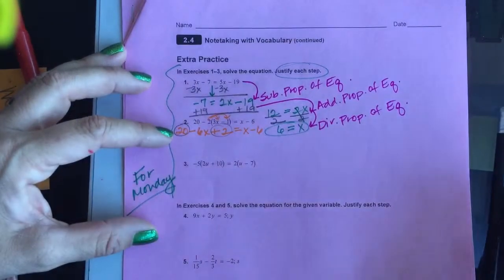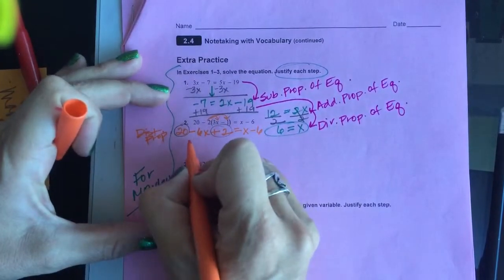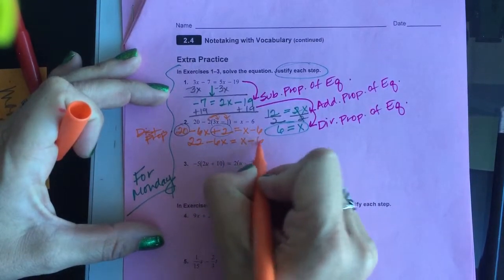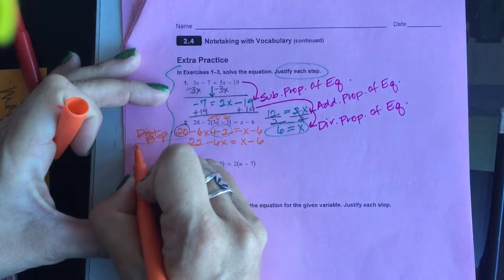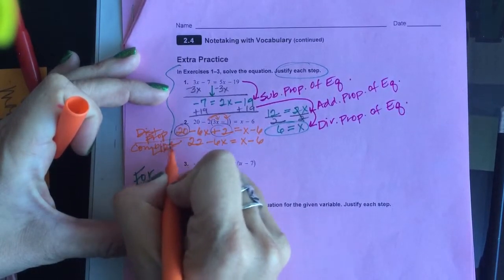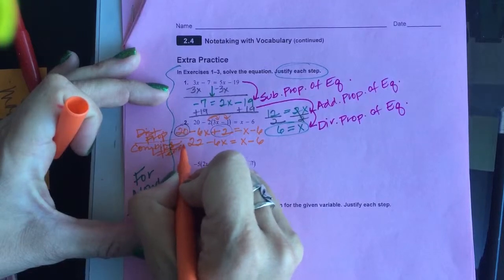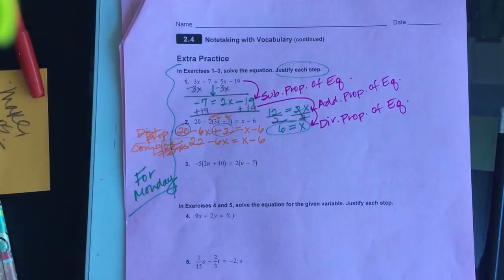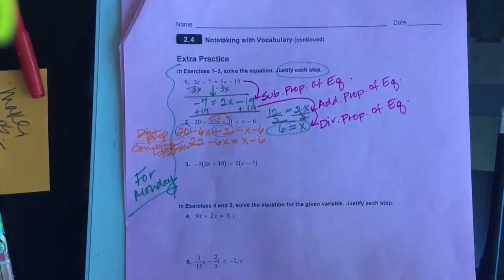Now, before I go on, I'm going to simplify, and you can call this combined-like terms if you want, or you could call it straight-up simplify. But I'm going to put together this 20 plus 2 and get 22 minus 6x equals x minus 6. I'm going to ask you guys to use combined-like terms. I added those numbers together. Now I'll start my undoing. So distribute, then simplify, then start undoing.